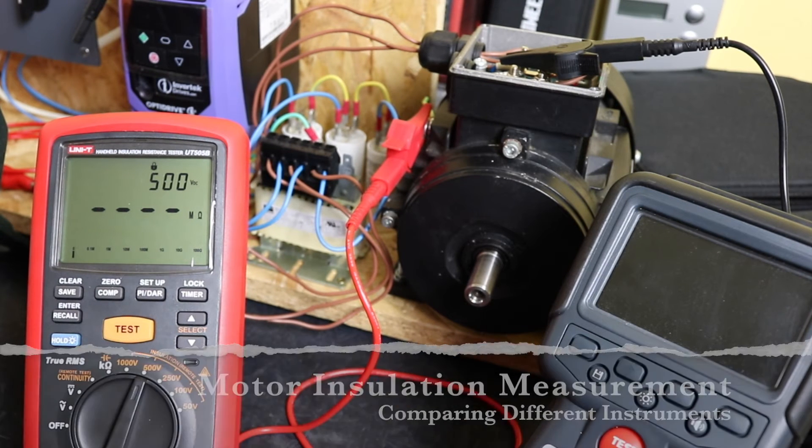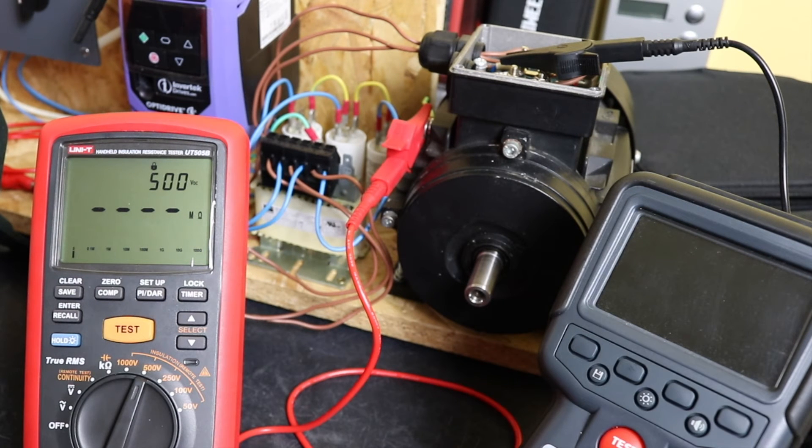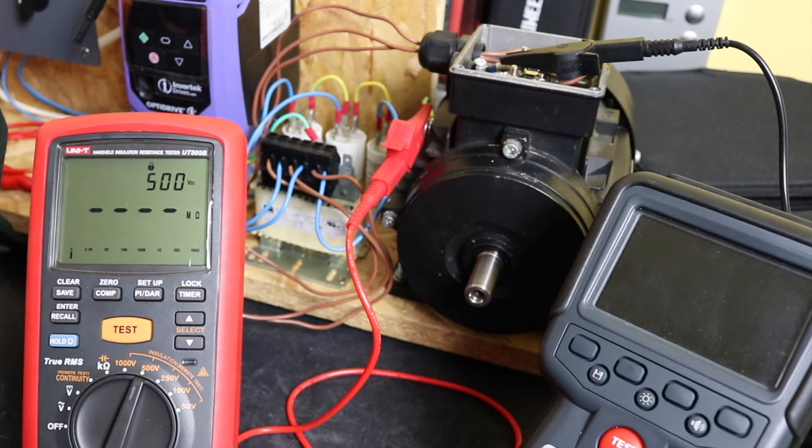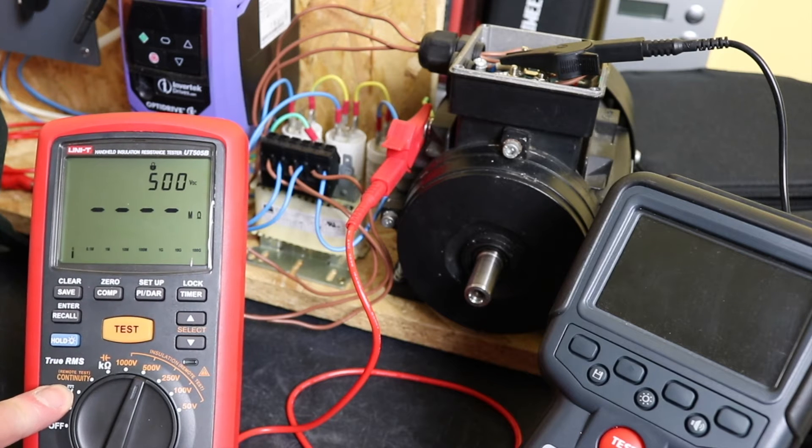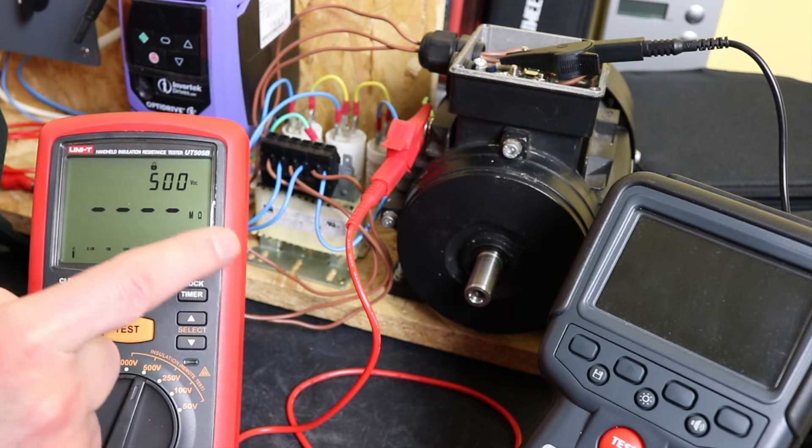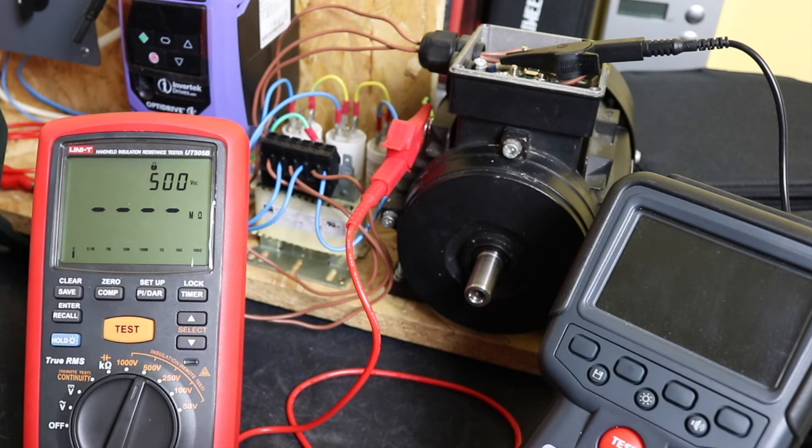Welcome back to the channel. Hope everybody's doing well. Today's video we are continuing with the UT505B, and this time looking at the insulation test function that I had a bit of an issue with when I tested this little three phase motor. It read almost twice the result I got from the MTR105, so we're going to take a look and see if there's anything obvious causing that issue.